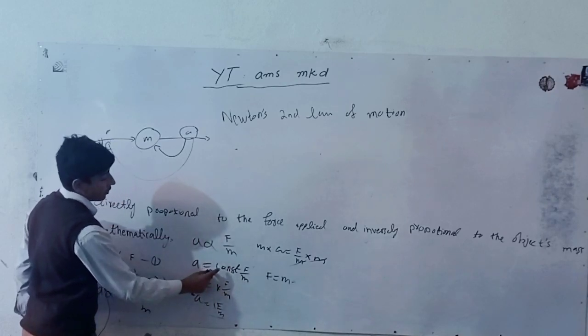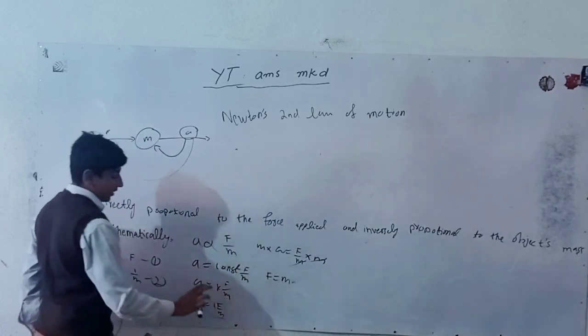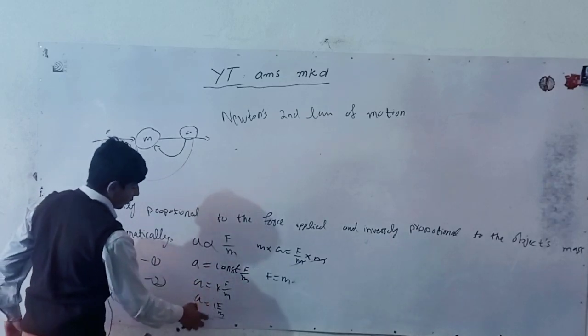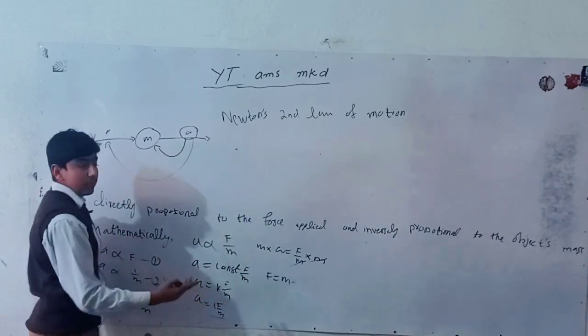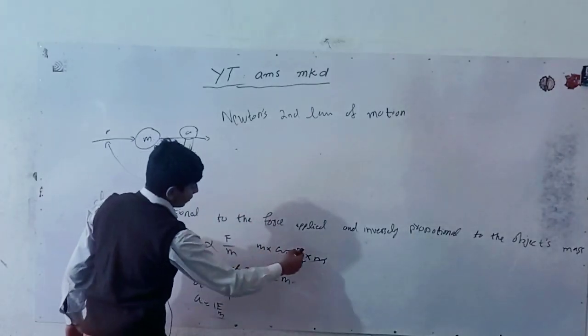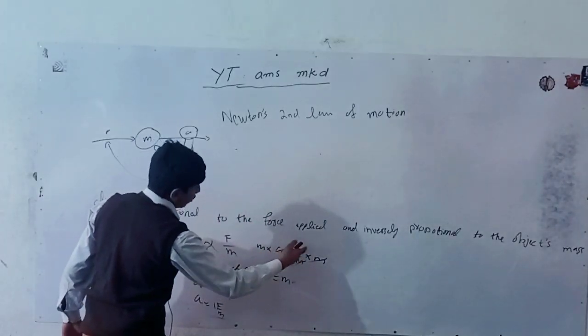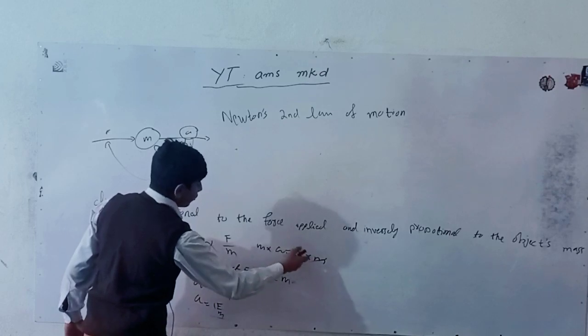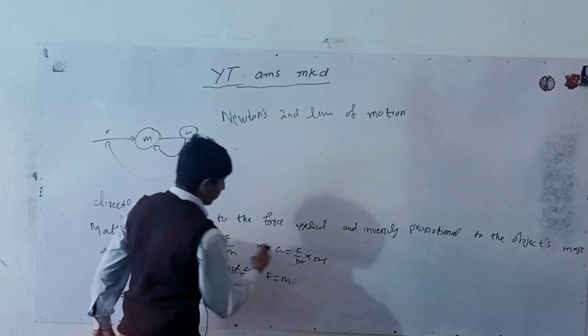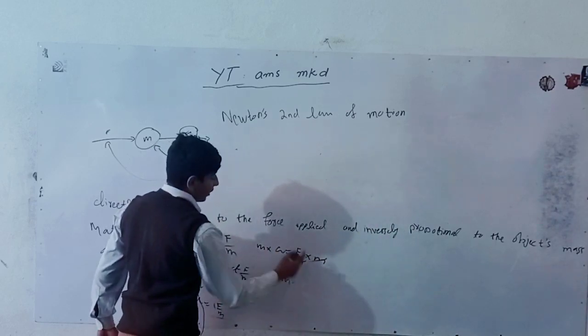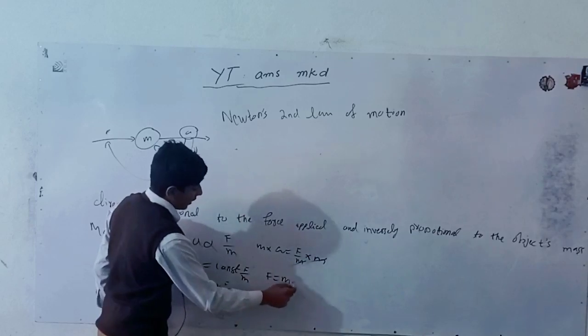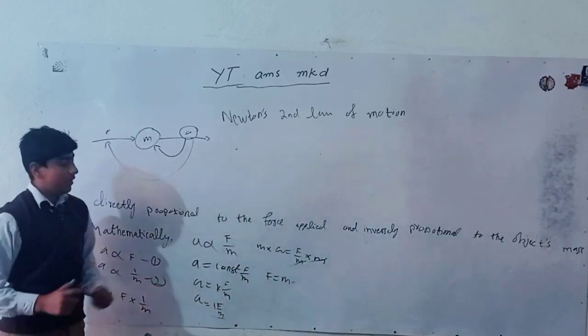We have to remove this constant of proportionality, so we will put a constant and the equality sign, and the rest of the equation will be the same. Here the constant is K, and the value of K is 1. So 1 multiplied with anything will result in the same number. So we will get acceleration is equal to force divided by M. We want to find force now, so we will multiply M with both sides. This M and this M will cancel each other out, and we will get force is equal to M times a—mass multiplied by acceleration.